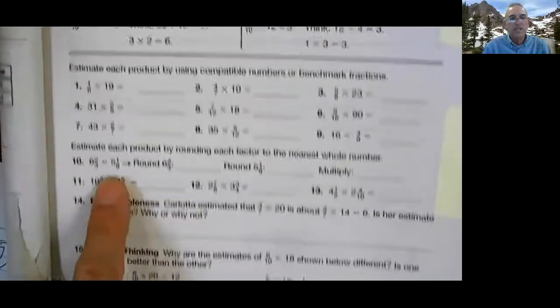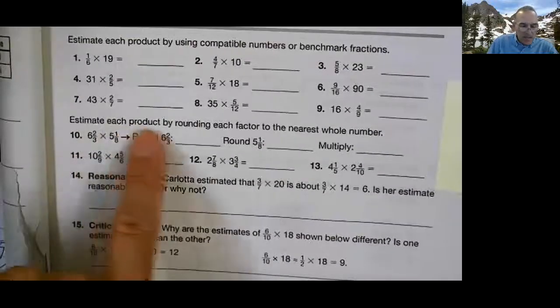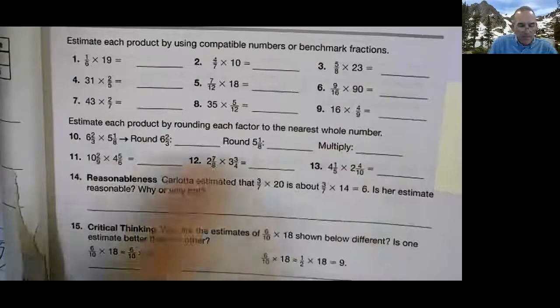What I'd like you to try is the R page. It is right here. R8-2. The reason I want you to do that one is because these problems right here are more like what we were just doing. Let's look at number 10 because it's a little bit different. Here's all it says. It says, estimate each product by rounding each factor to the nearest whole number. Oh, that's too easy.